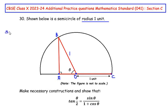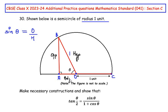Let us start with sinθ first. The sine of any angle θ is given as the opposite side over the hypotenuse. Since θ is our angle of concern, the side opposite to θ is AB, making it the opposite side. The side opposite to the 90-degree angle is always the hypotenuse, so OB becomes the hypotenuse. The remaining side OA becomes the adjacent side. So sinθ equals opposite over hypotenuse, which is AB over OB.